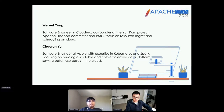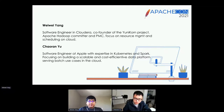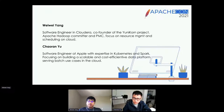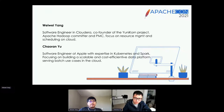Hi everyone, my name is Chaoran. I work at Apple. My focus is on building a scalable batch processing platform in the cloud. I've been working with the Kubernetes ecosystem for the past several years. I've been contributing to YuniKorn and also the Spark on Kubernetes Operator project, and I'm excited to share my learnings about YuniKorn.